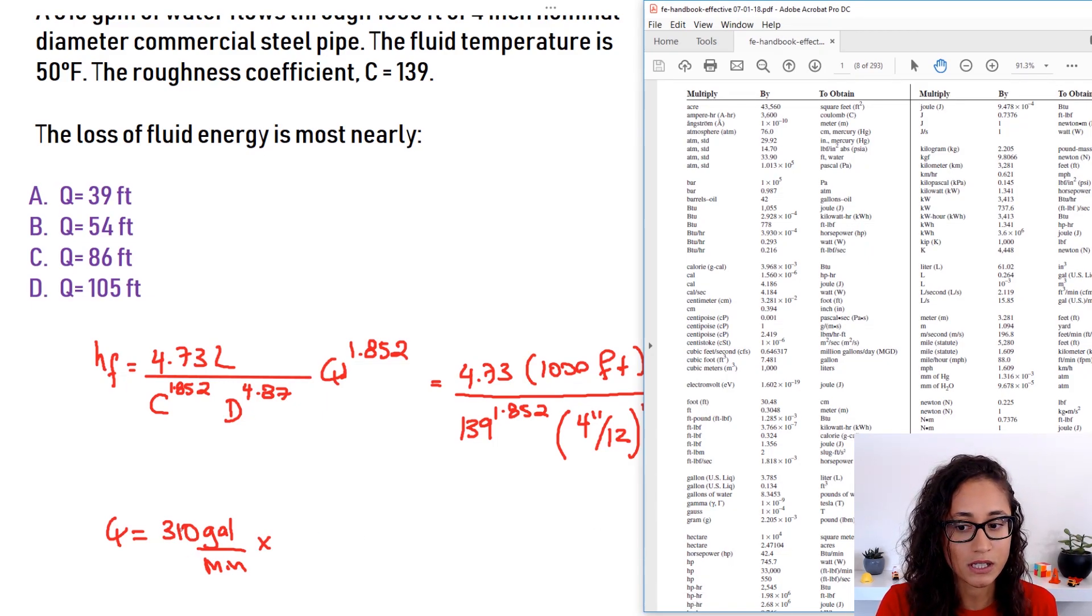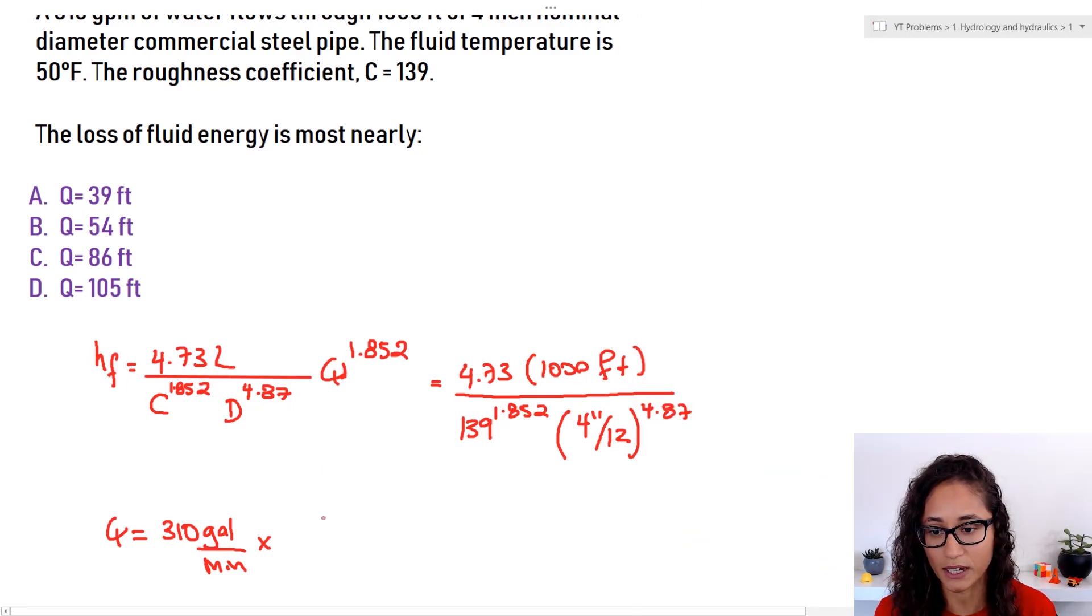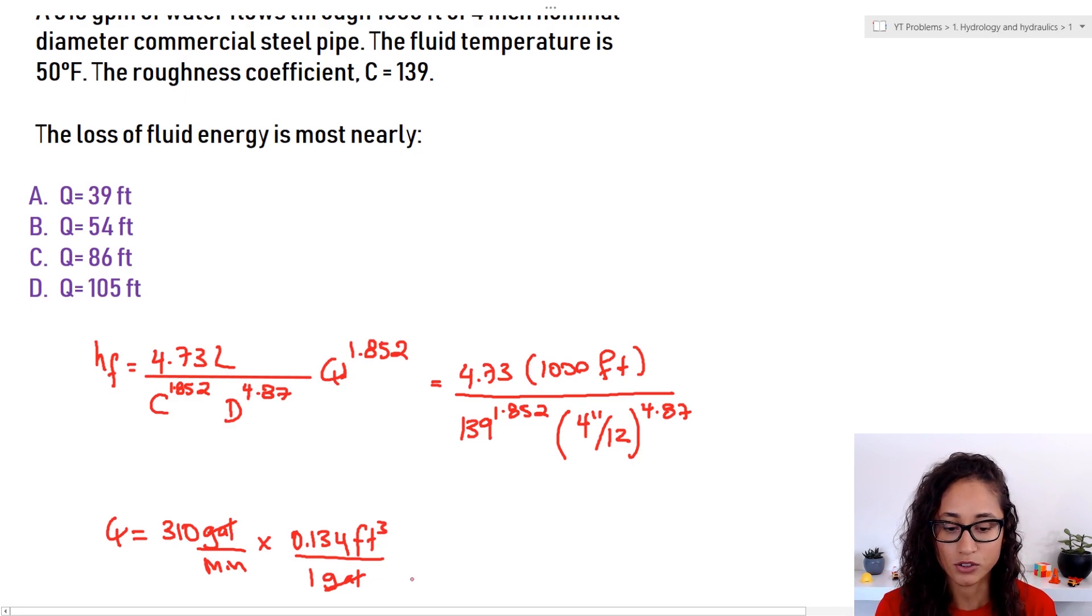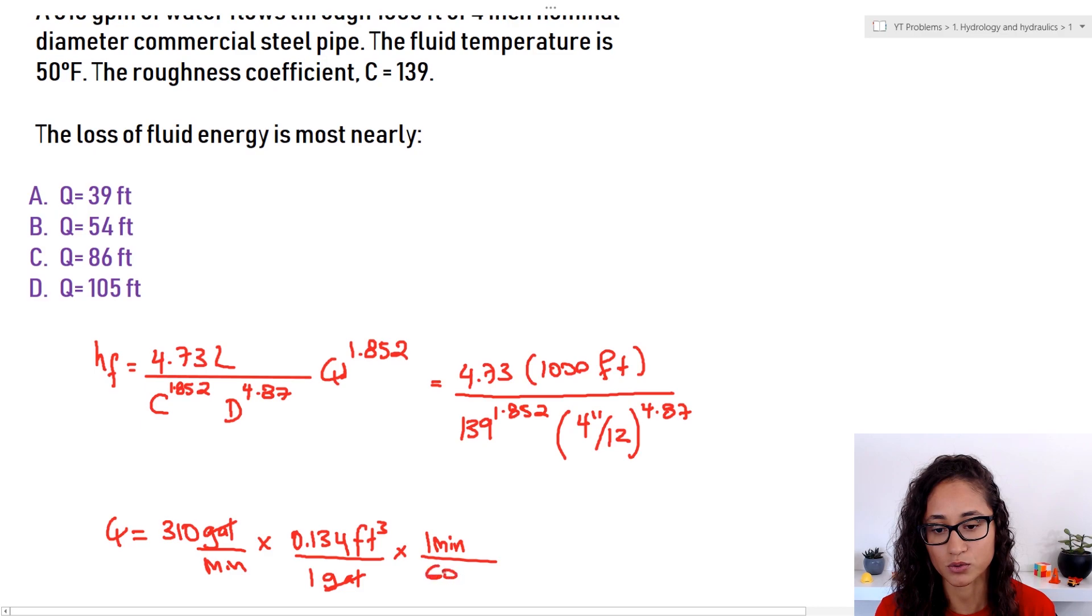So all I got to do is take 310 gallons, multiply it by this number here, 0.134. And that would already give me cubic feet, not cubic feet per second, but just cubic feet. Okay. So let's do that guys. So we said multiply it by 0.134 cubic feet. And this is per one gallon. So gallon is done. Now I got to convert minutes. So we know that we have 60 seconds in one minute. So one minute is equal to 60 seconds. Minute cancels. And then I have seconds in the denominator. And so now I have cubic feet per second. Perfect. Exactly what we want.